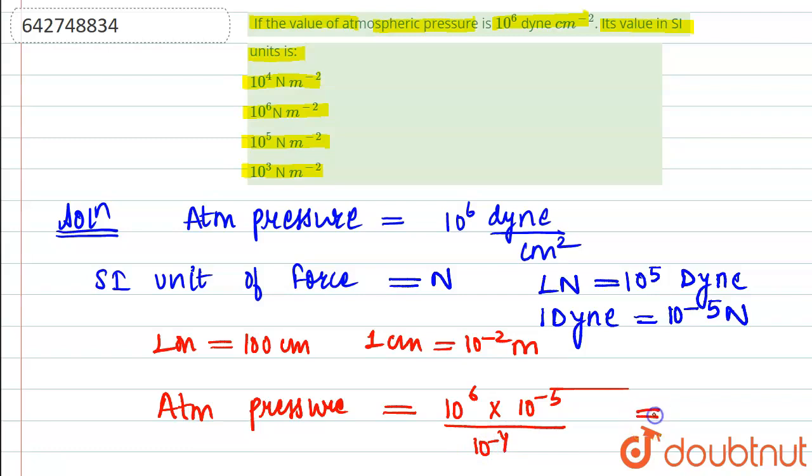Cancelling the respective terms, we get equal to 10 to the power 5 N per meter square. So atmospheric pressure in its SI units will be equal to 10 to the power 5 N per meter square. Option number C is the correct answer. Thank you.